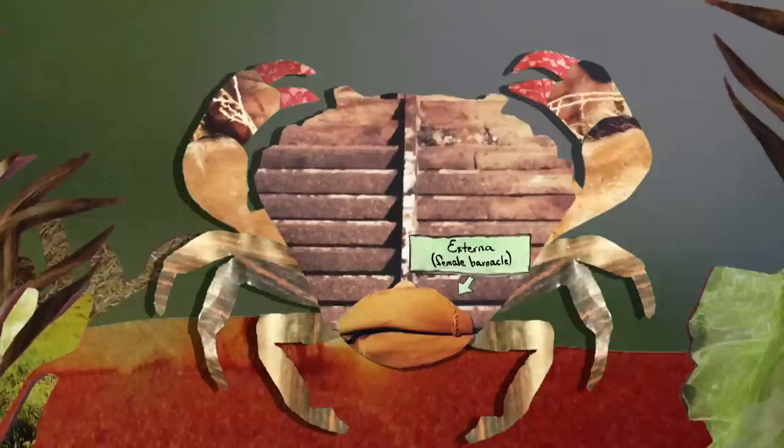Soon, a sac starts poking out from the crab's abdomen. This is an externa, the reproductive organs of the adult female barnacle. The externa attracts male barnacles, and when a male arrives,